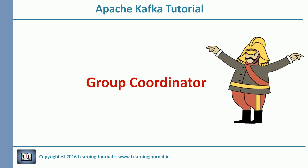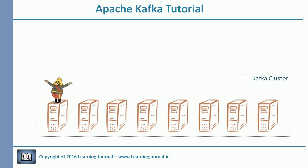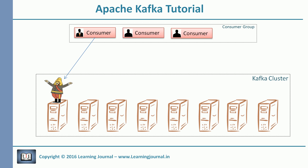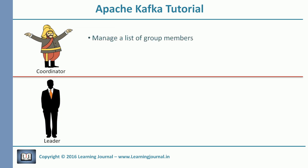The answer is simple: a group coordinator oversees all of this. One of the Kafka brokers gets elected as a group coordinator. When a consumer wants to join a group, it sends a request to the coordinator. The first consumer to participate in a group becomes the leader; all other consumers joining later become members of the group. So we have two actors — a coordinator and a leader. The coordinator is responsible for managing a list of group members. Every time a new consumer joins the group or an existing member leaves, the coordinator modifies the list.